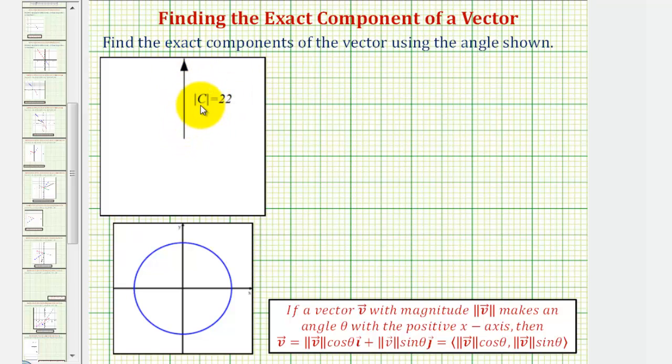We're given this vector here and the magnitude is 22. But it'll be helpful if we assume the initial point is at the origin on the coordinate plane. So let's sketch the axes. This would be the x-axis and this would be the y-axis.